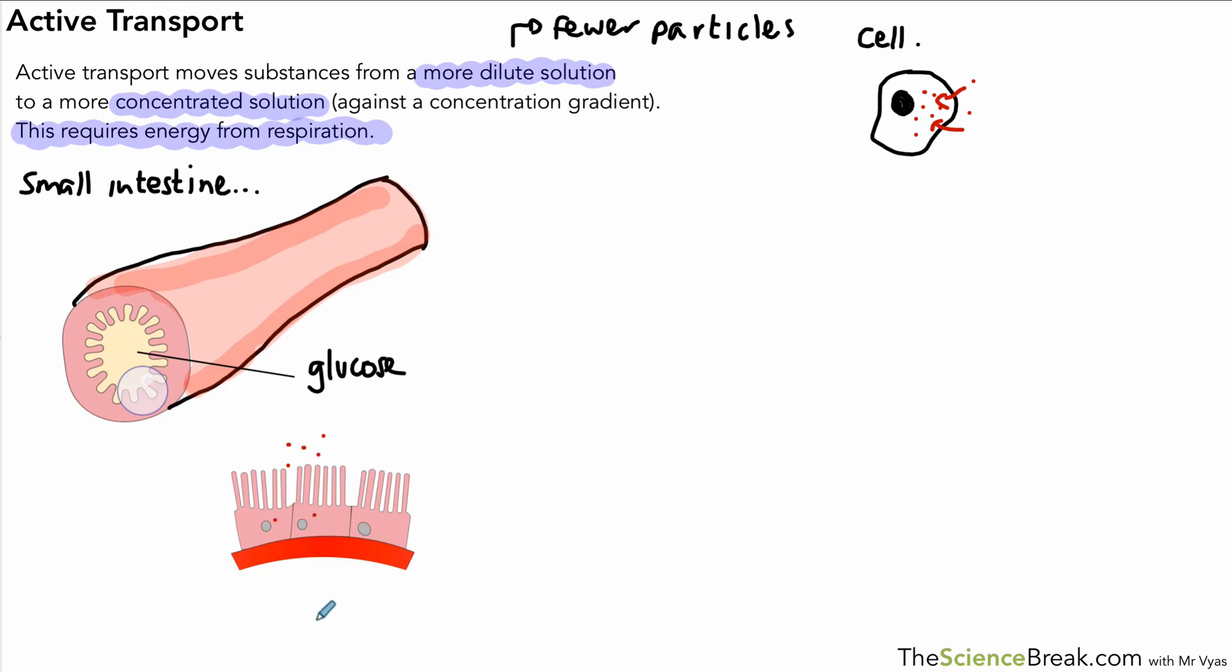We might have glucose in there that has been digested from the food, and that glucose could quite happily diffuse in, but eventually it'll get to a point where it's in roughly equal concentration inside and outside. So we would need to switch to active transport to remove the remainder of that glucose. We would get to a point where we have a higher concentration of glucose on the inside of those cells.